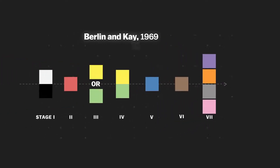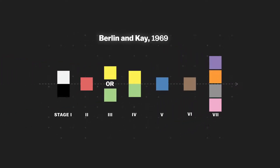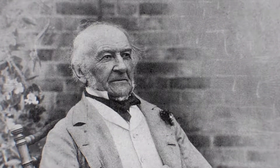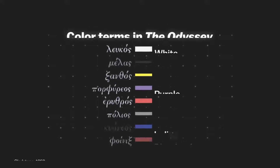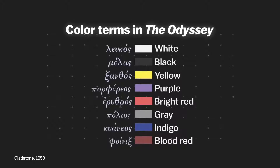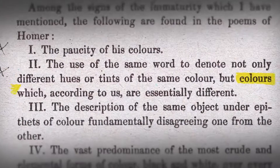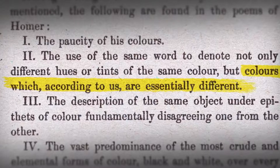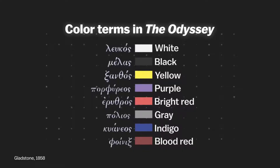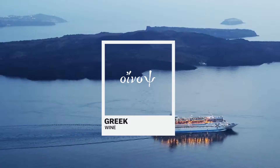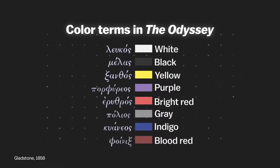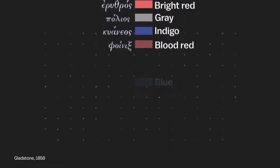The theory was revolutionary, but Berlin and Kay weren't the first researchers interested in how we name colors. In 1858, William Gladstone, who would later become a four-term British prime minister, published a book on the ancient Greek works of Homer. He was struck by the fact that there weren't many colors in the text at all. When there were, Homer would use the same word for colors which, according to us, are essentially different — using the same word for purple to describe blood, a dark cloud, a wave, and a rainbow. And he referred to the sea as wine-looking. Gladstone didn't find any references to blue or orange at all.